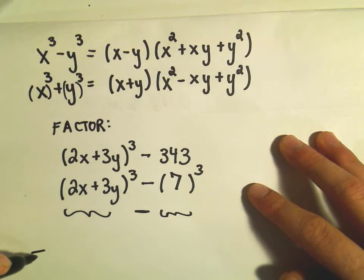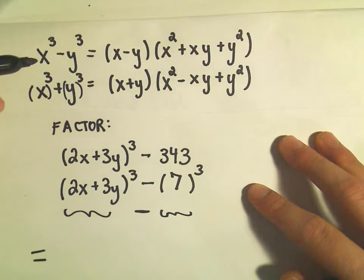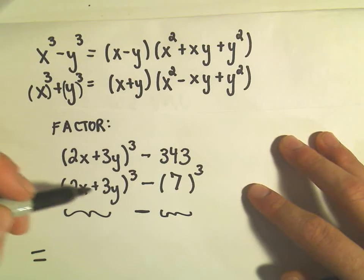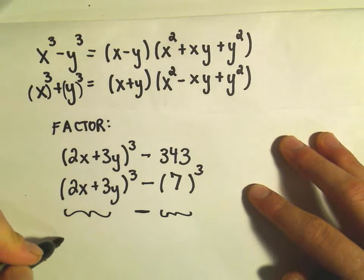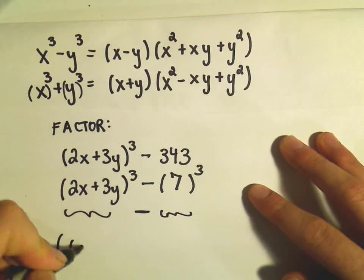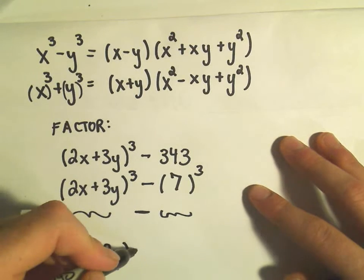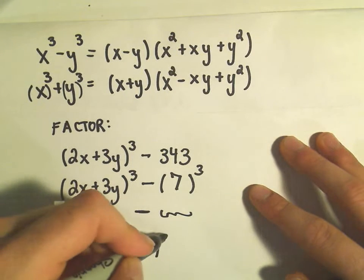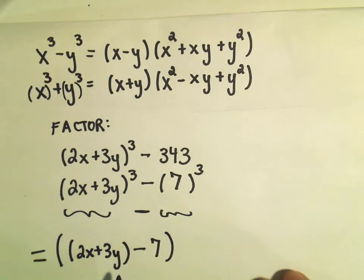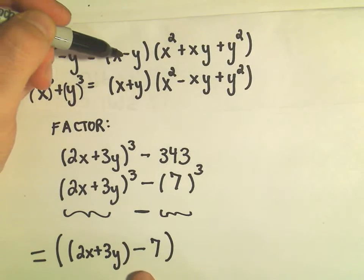So when we factor this, it says take the very first thing that's being cubed and write it down. So we've got 2x plus 3y. And then it says put a minus. So there's our first set, we've got our x minus our y.